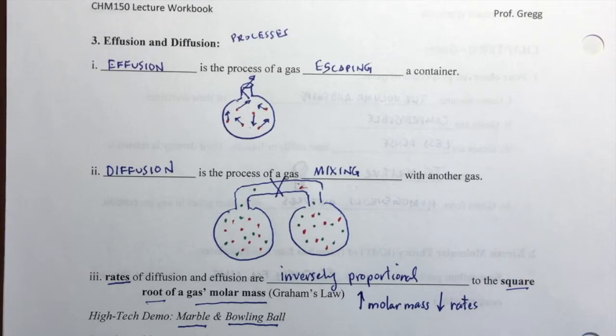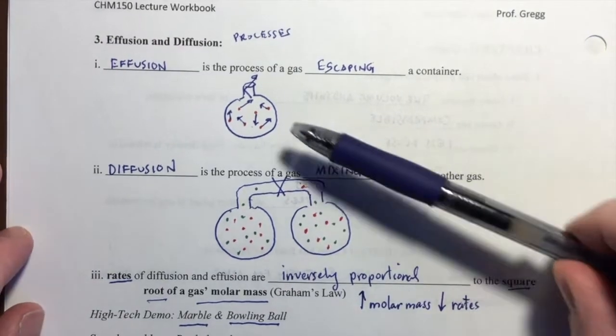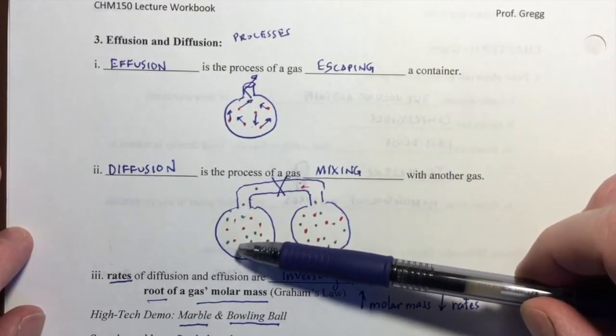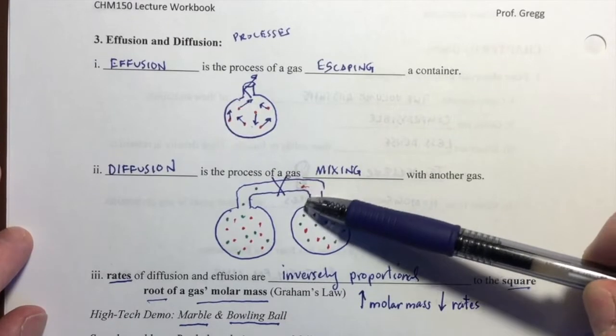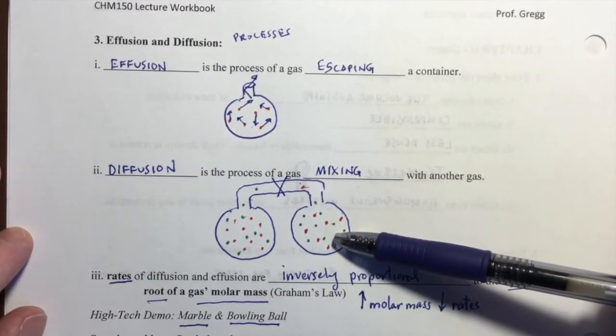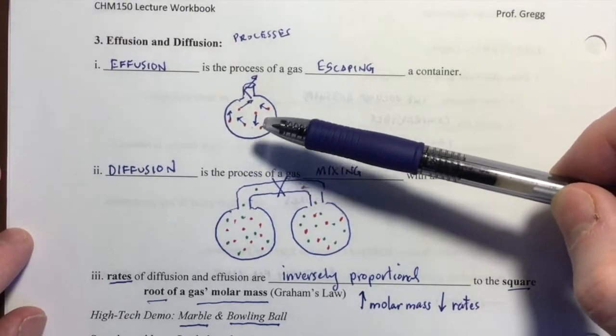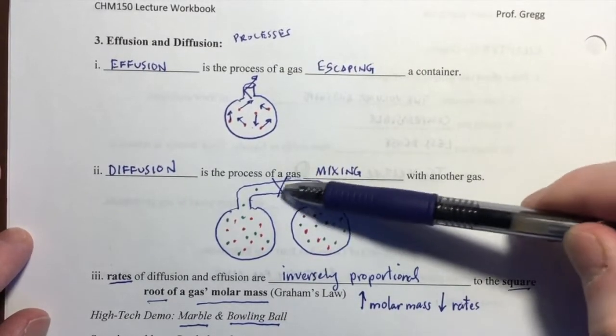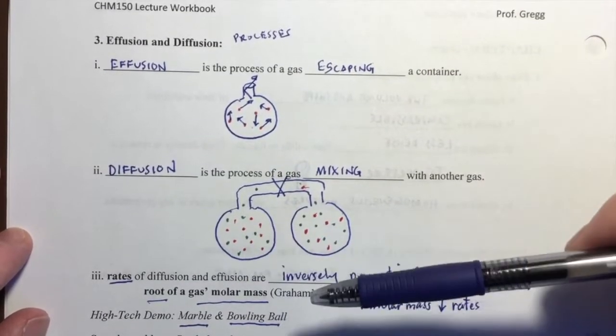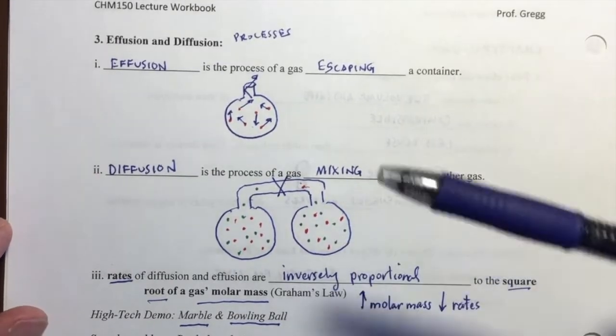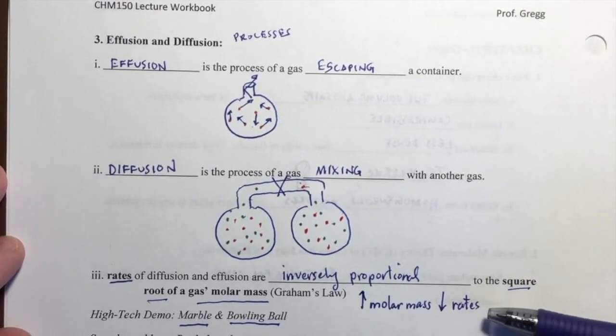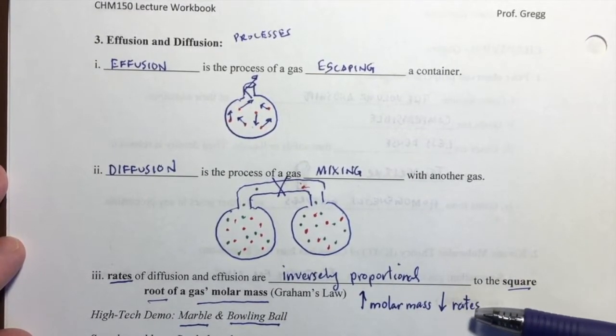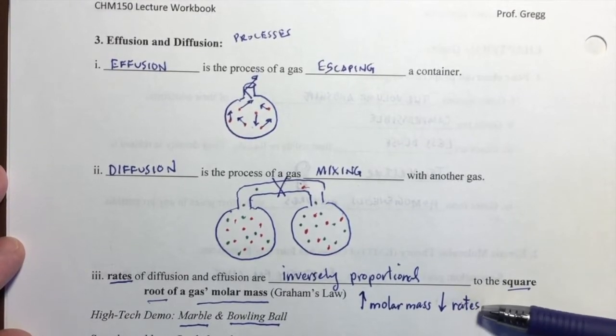And if you're traveling slower, that means it's going to take longer for you to effuse your way out of a container. If you're traveling slower, it's going to take longer for you to diffuse any other gas. Whereas if you're lightweight and traveling faster, you're going to bounce your way out of that container very quickly, or you're going to diffuse and mix with the other gas very quickly. So that's all I want you to pick up from this. There is a relationship here. The heavier the molecule, the slower it travels, and therefore the slower the rates.